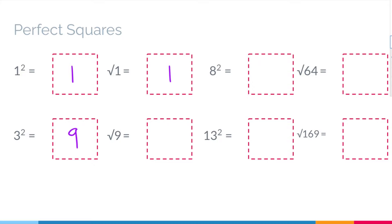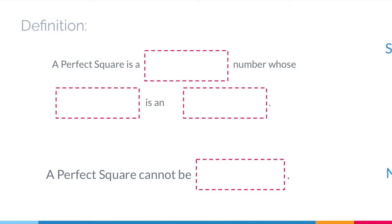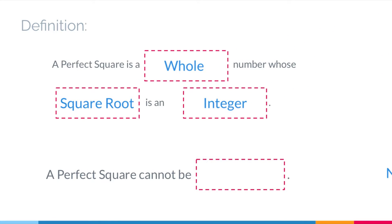Eight squared is 64. Thirteen squared is 169. The square root of 64 is 8, and the square root of 169 is 13. We're looking for numbers that multiply times themselves to give us the squares, and for square roots we go in the opposite direction. A perfect square is a whole number whose square root is an integer, and a perfect square can never be negative.